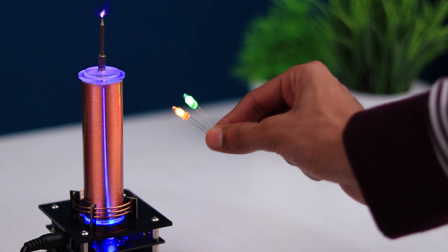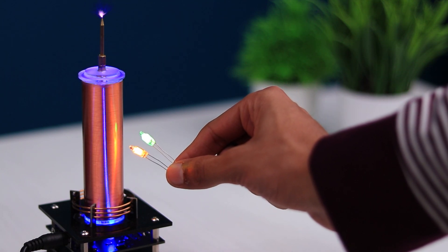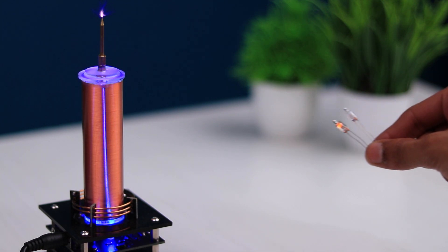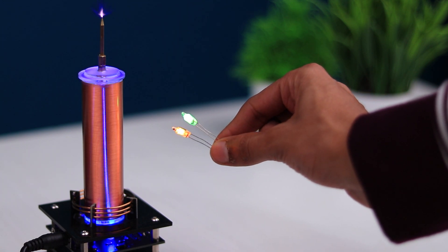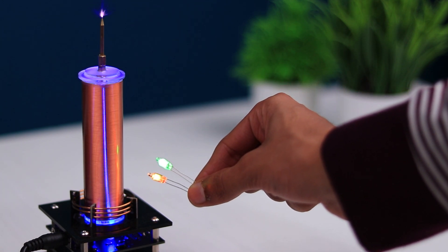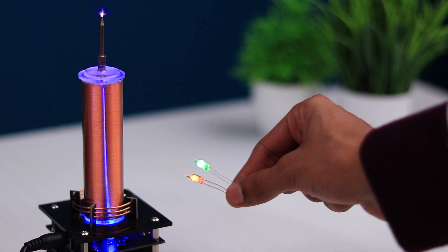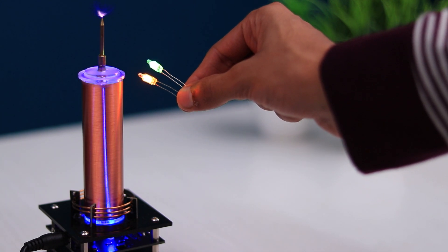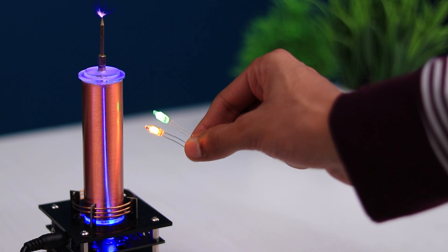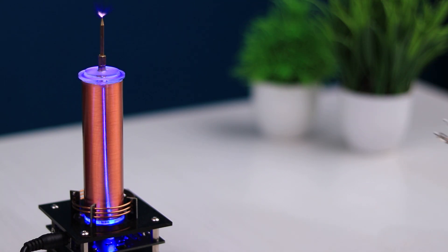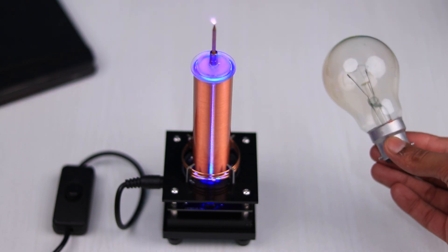The Tesla coil produces a high voltage and high frequency pulsed electric field. When the gas lamp enters this electric field, the gas in the lamp will be broken down, thus emitting light. The intensity of electric field decreases as you move away from the coil. That's why the bulb grows brighter when it's nearest to the Tesla coil and slowly fades away when you move away from it.